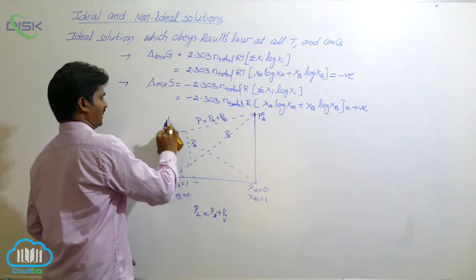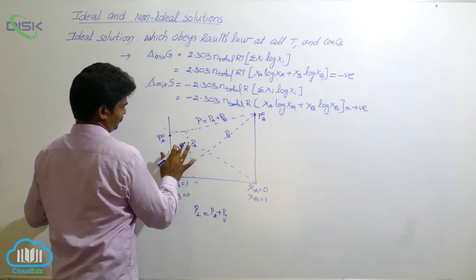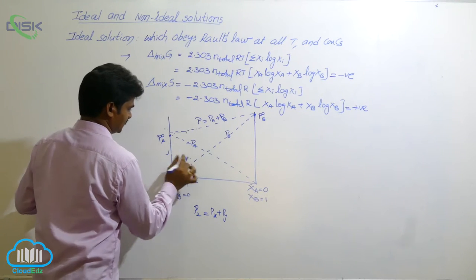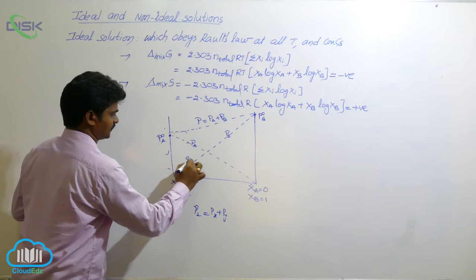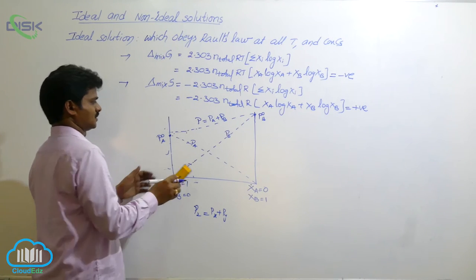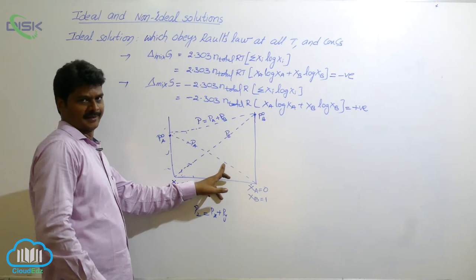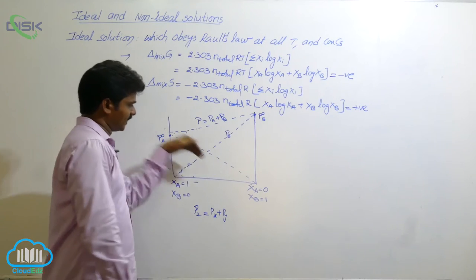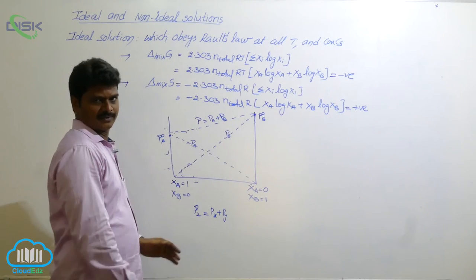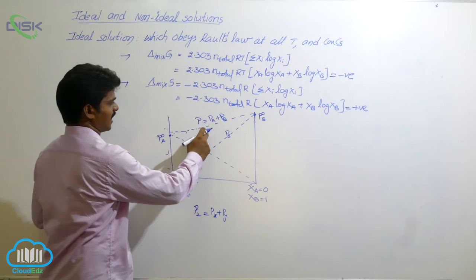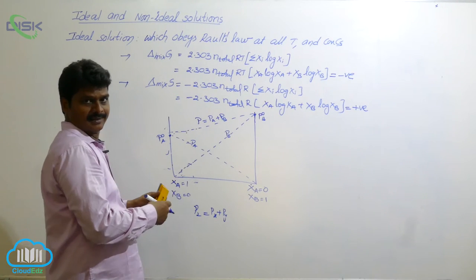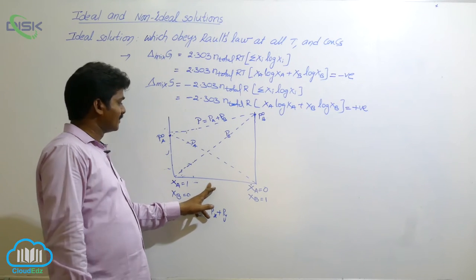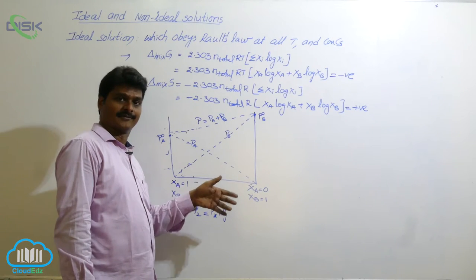This is the ideal linear line — the ideal distribution line. This is PA and this is PB. This is the partial pressure line for component A, and this is the partial pressure line for component B — a decreasing trend for A and an increasing trend for B. At any composition, total pressure equals the sum of the partial pressures of A and B.